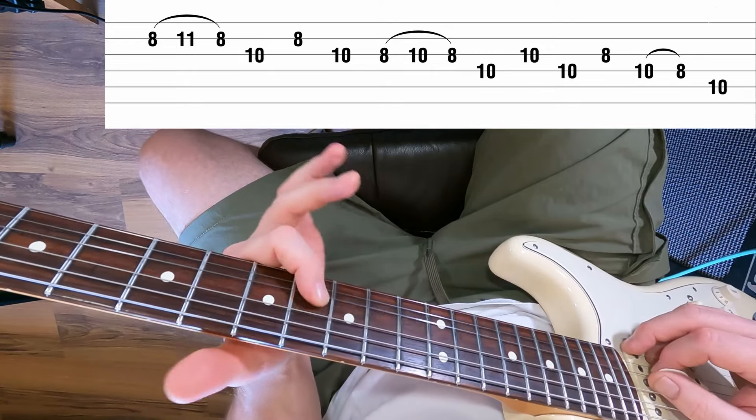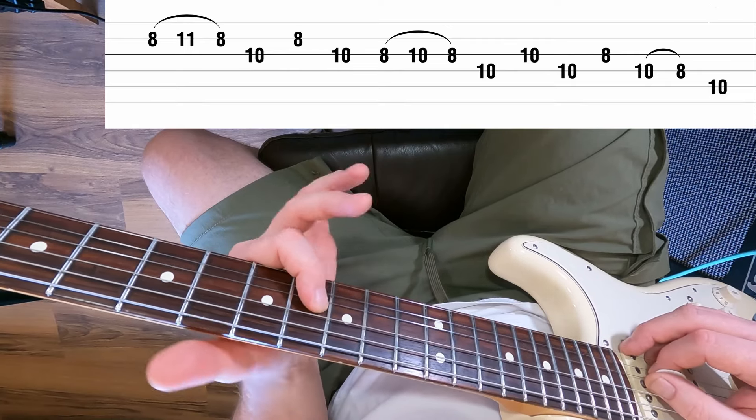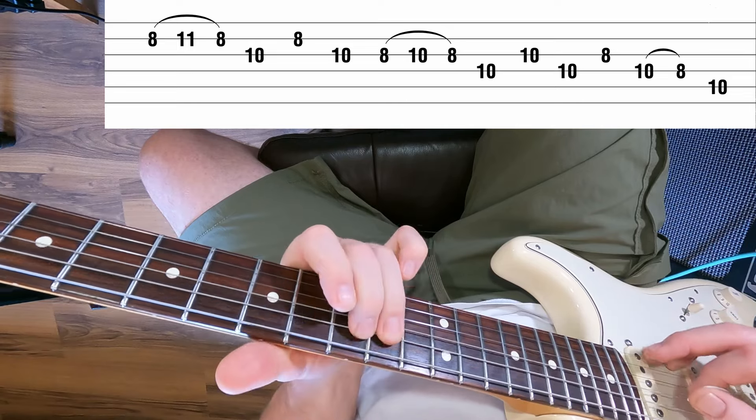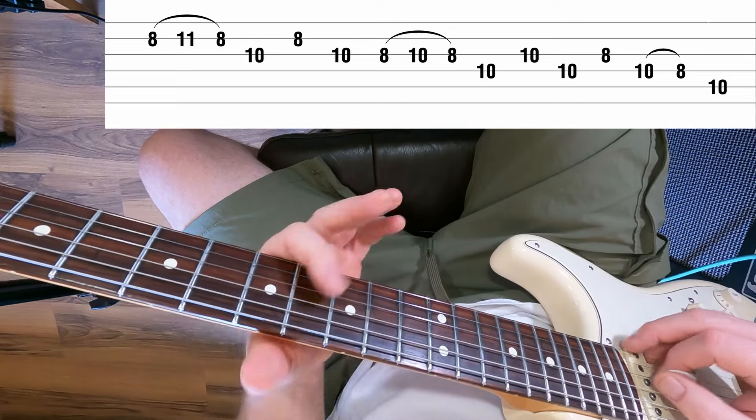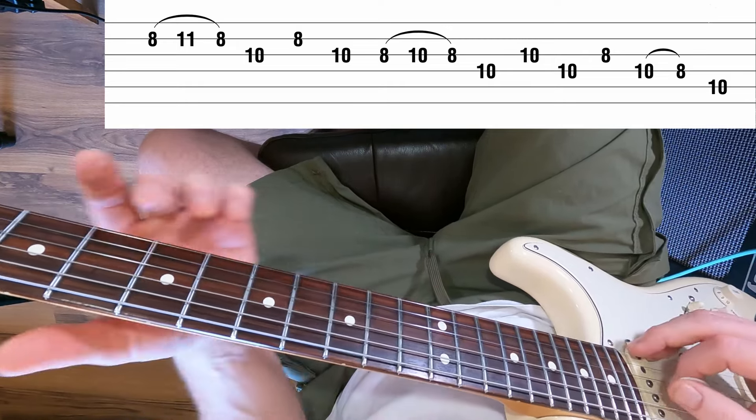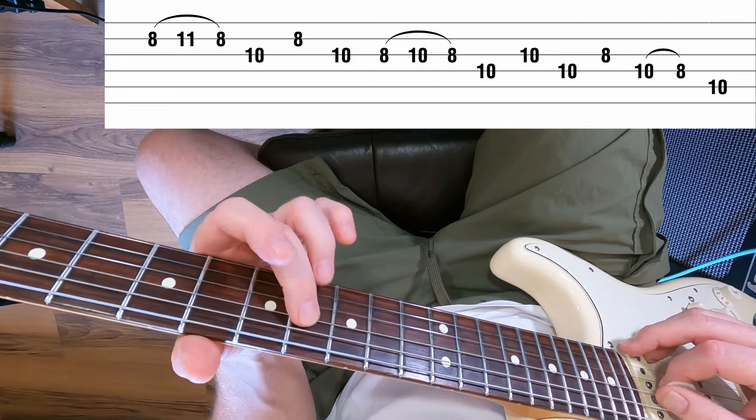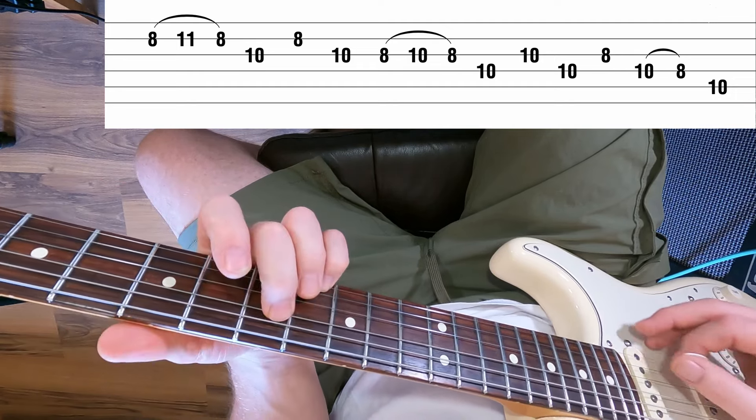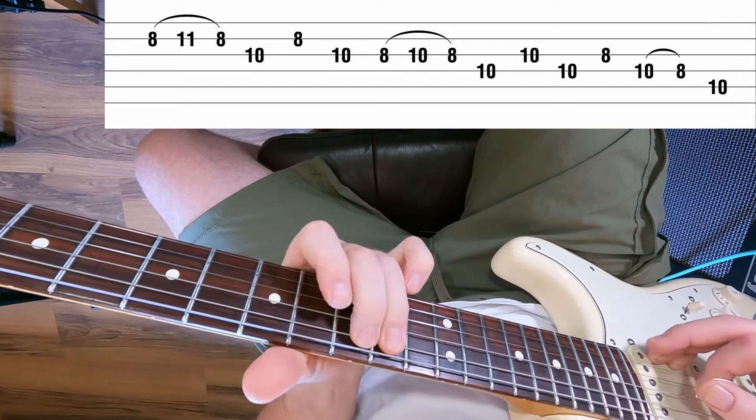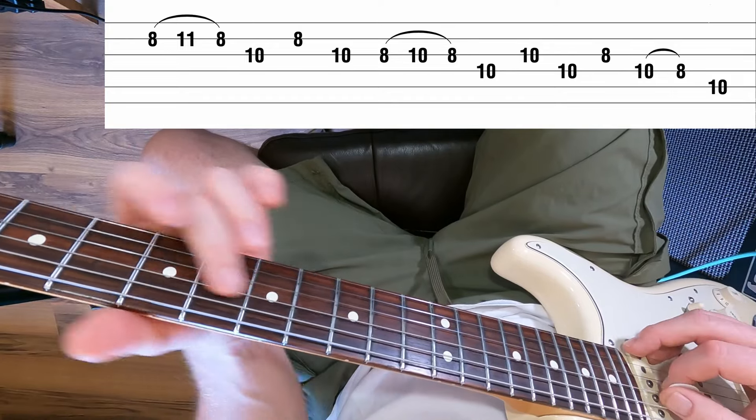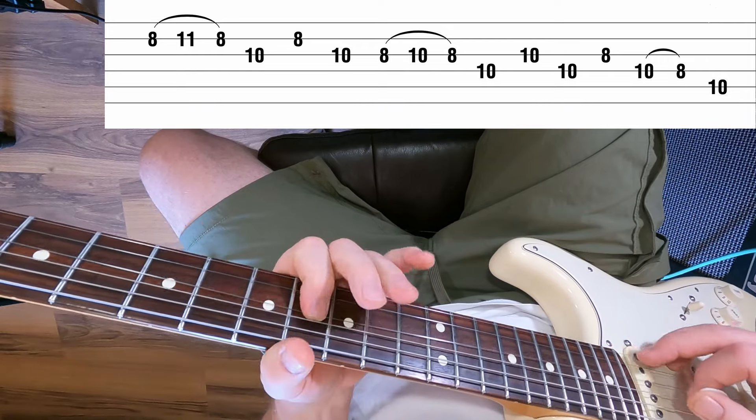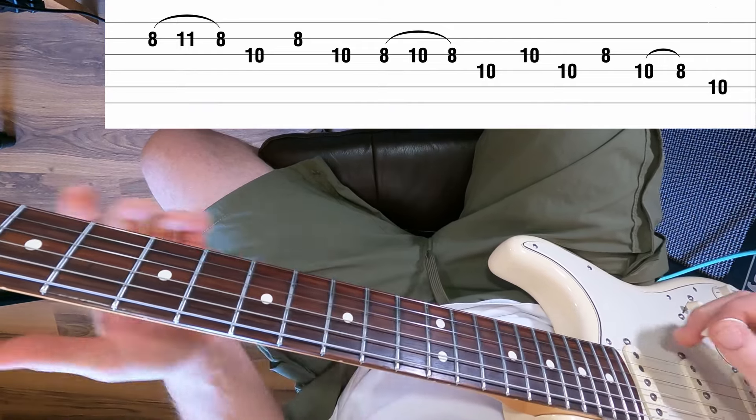You can give that minor third when you get to the eighth fret of the G a little tweak if you want. You can stop and pause, make it your own. You could put it at the end of a turnaround, instead of doing something else, you could put this in. Obviously it's a lot faster, but practice these things slowly.